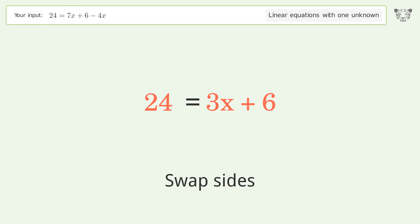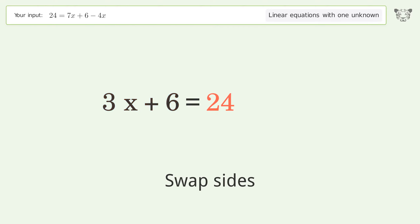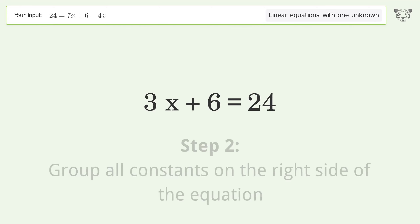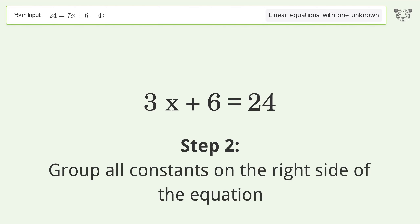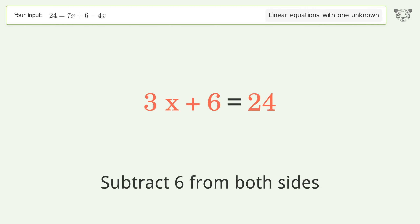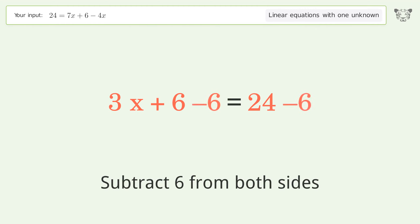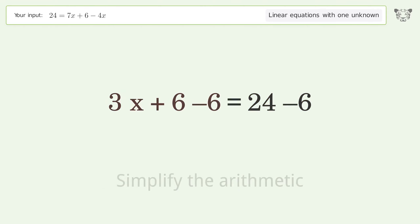Swap sides. Group all constants on the right side of the equation by subtracting six from both sides. Simplify the arithmetic.